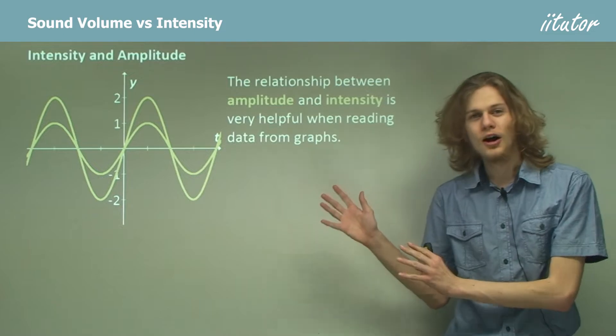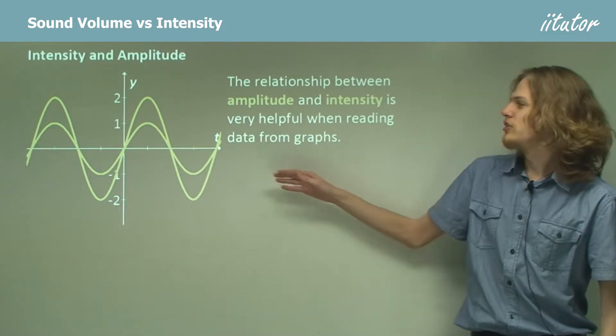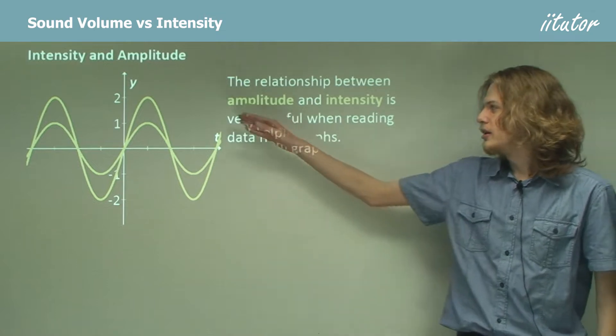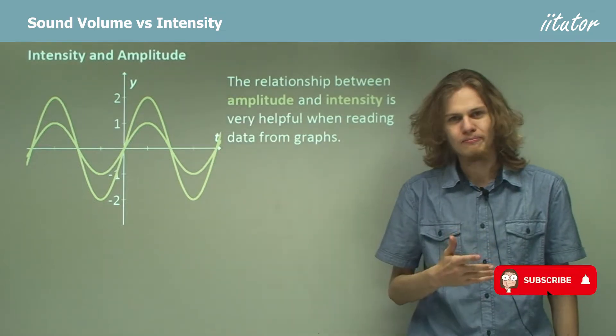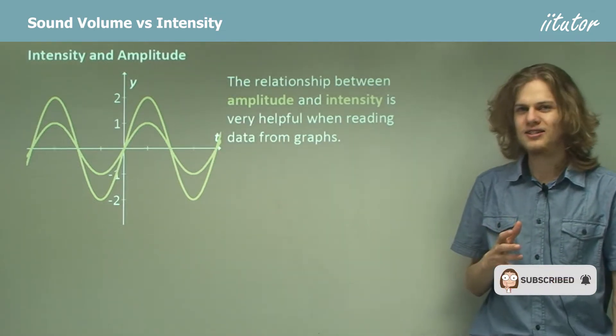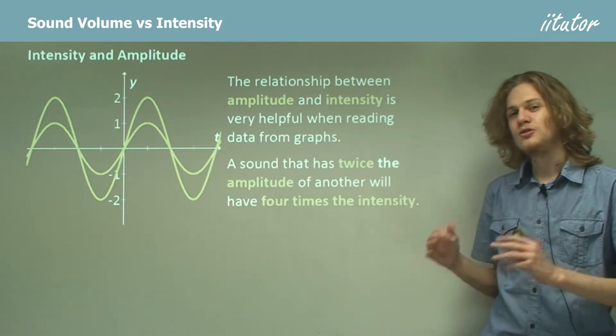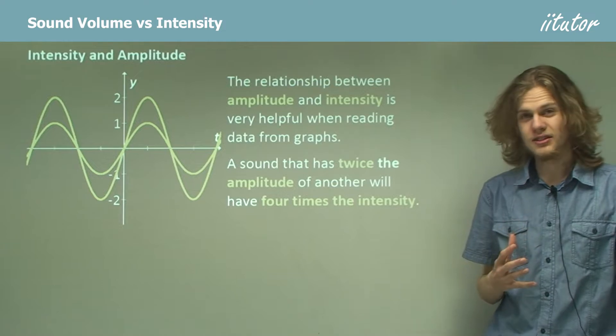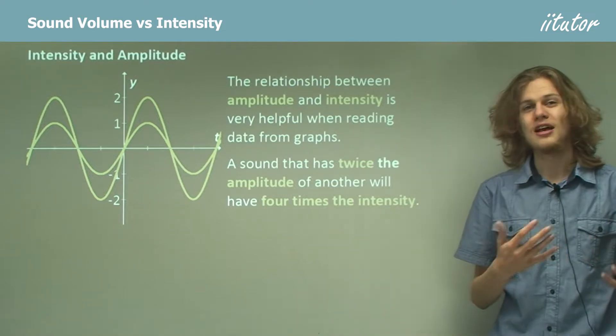If we're looking at data from graphs, then this can be very helpful. You can see over here that I've got two graphs of waves, except one has twice the amplitude of the other. So how will that change its intensity? Well, a sound that has twice the amplitude will have four times the intensity. This means that it will be four times as loud.